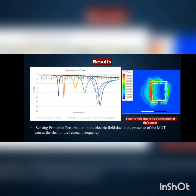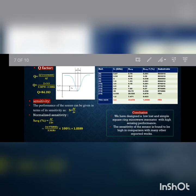The frequency versus S21 curve — S21 is the power transferred from port 1 to port 2 in a two-port system. In practical use, we use a VNA (Vector Network Analyzer), which is a two-port measurement device to measure the power transferred from one port to another, or the power reflected back to the port where the signal was fed.